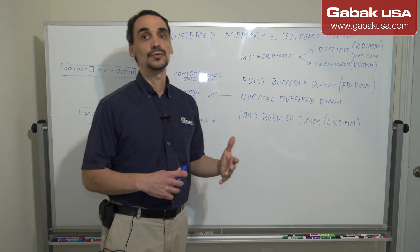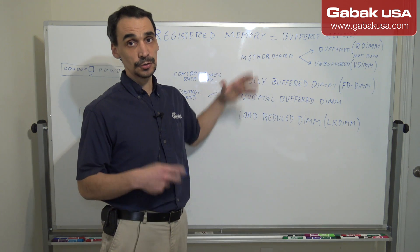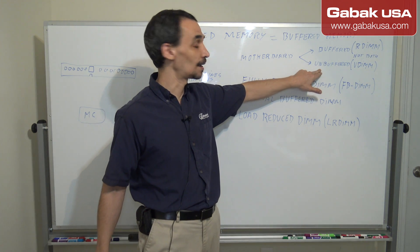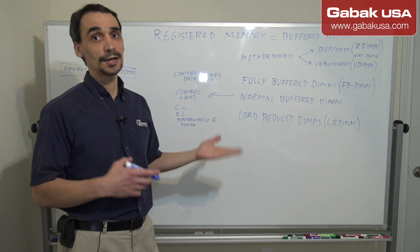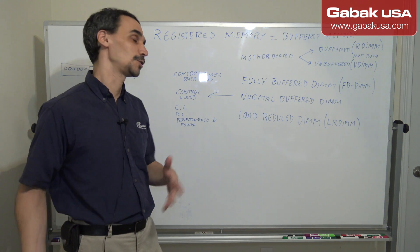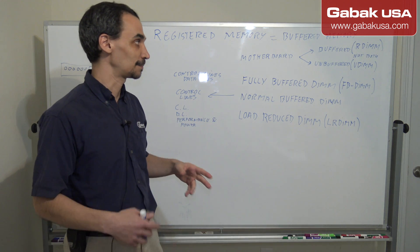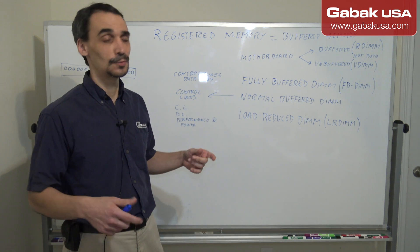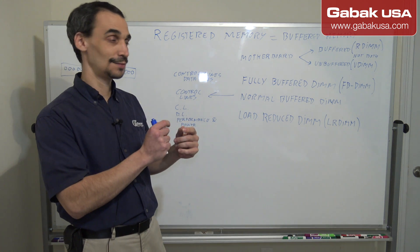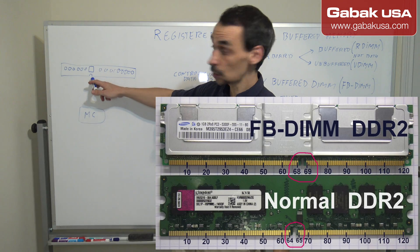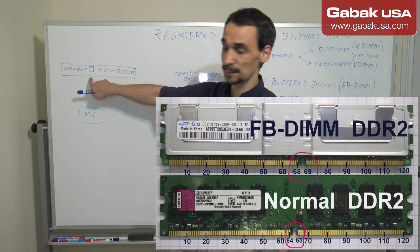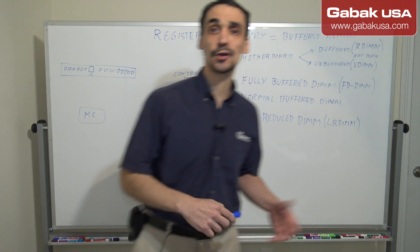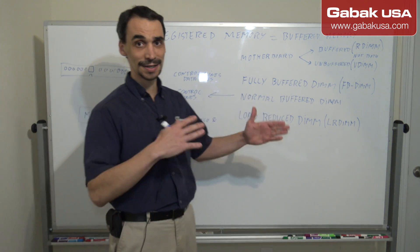Now we're going to look at what kind of motherboard you're going to use. You have two options: buffered and unbuffered. You can use one or the other, but you cannot use both at the same time. Most motherboards now have slots that are a little bit different — they have a new notch position, so one RAM type has the notch here and the other has it on the other side, so you won't be able to fit the wrong one in.